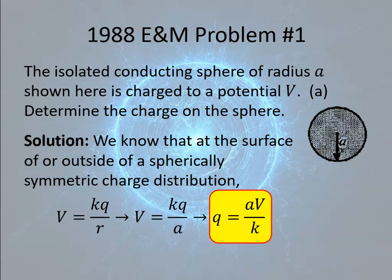Notice that we needed to put things in terms of the variables given. Just saying V equals KQ over R and being done with it would not have worked, because they told us that the radius was A and they told us the potential was V, so our answer needed to be in terms of the variables given. They gave two points for starting off with V equals KQ over R, and one point for the final answer being Q equals AV over K.